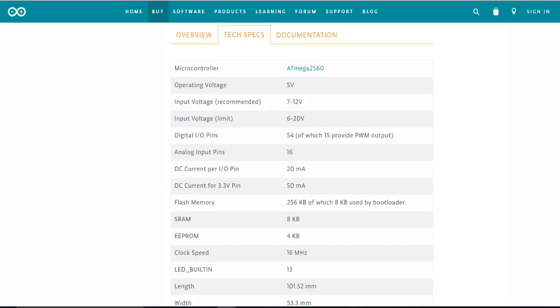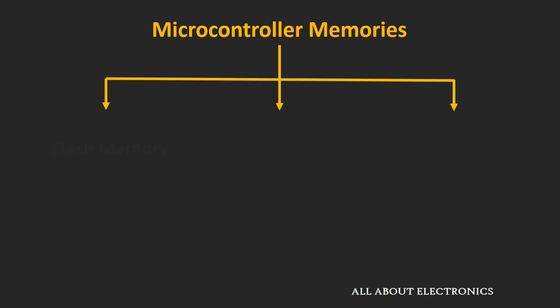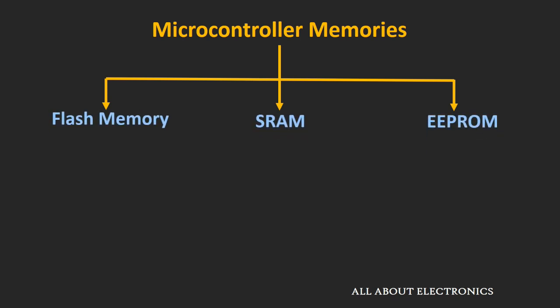If you see the specs of this microcontroller, you will find three different types of memory. The first is the flash memory, second is the SRAM, and third is the EEPROM. Some of you might have a question in your mind: which memory is used as a program memory and which memory is used as a data memory? So let's find out in this video the purpose of all three memories.